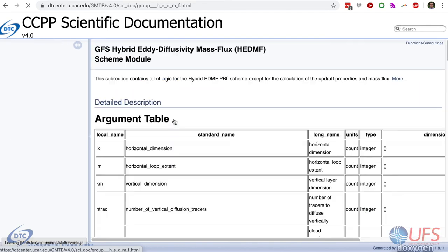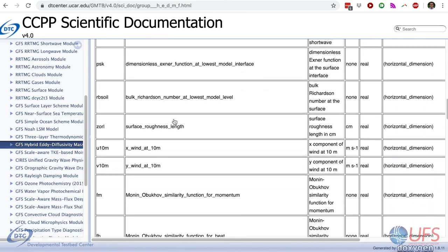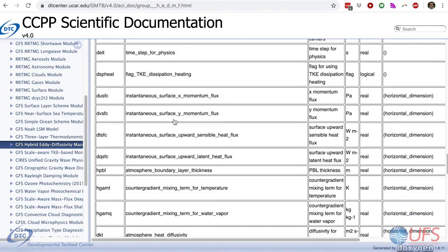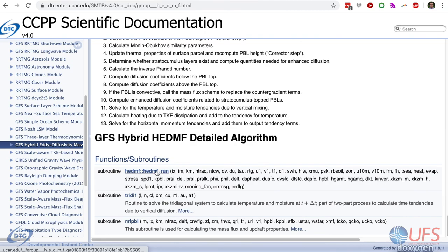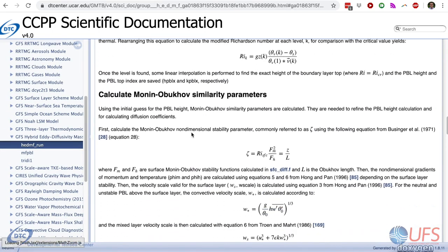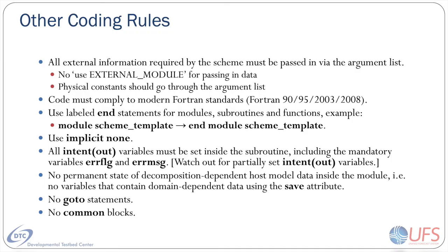Examples of the documentation produced can be found at link number 3 in the description. The documentation includes a description of the arguments, a high-level description of the algorithm, and often a detailed description of the algorithm with equations and references.